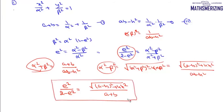If we follow the same method for a hyperbola, we again end up getting the same result: e²/(2 - e²) = √[(a - b)² + 4h²] / (a + b). So if we know a, b, and h, we can simply find the eccentricity of any ellipse or hyperbola using this formula.